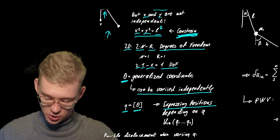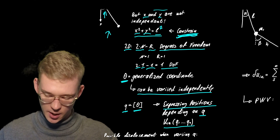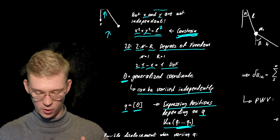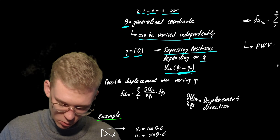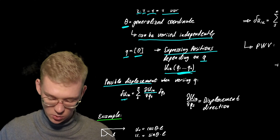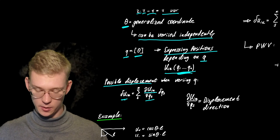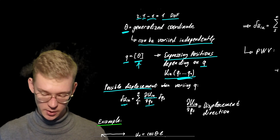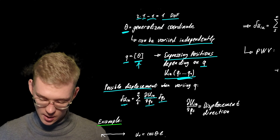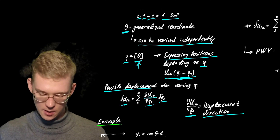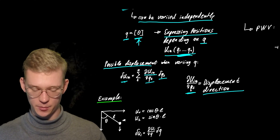Now we can express our positions depending on our q's. So u_ik is now not like x and y, but some position dependent on our q's. The virtual displacement we are going for is our positions u_ik derived by d q_s — in our case just theta — times delta q_s. And d u_ik / d q_s is our displacement direction.